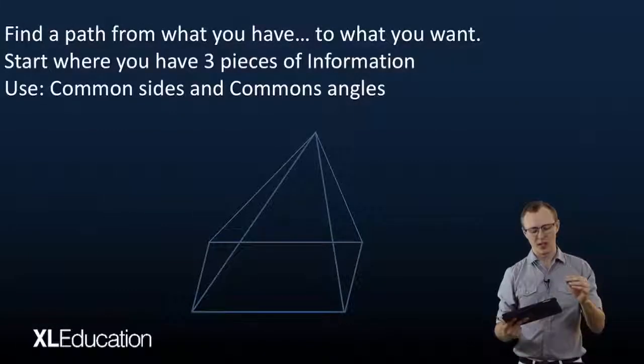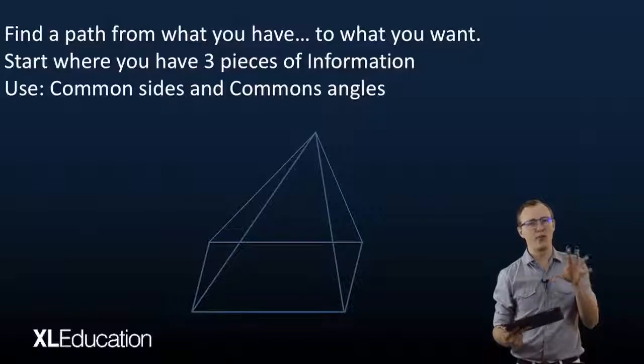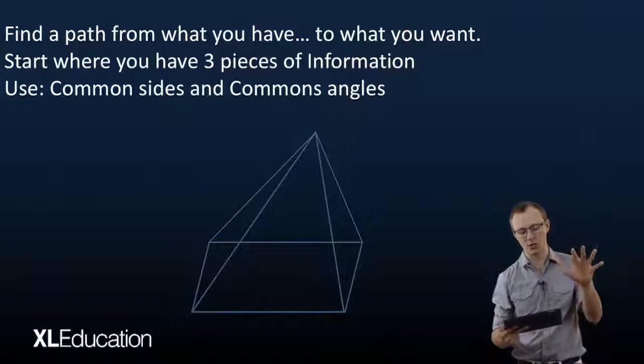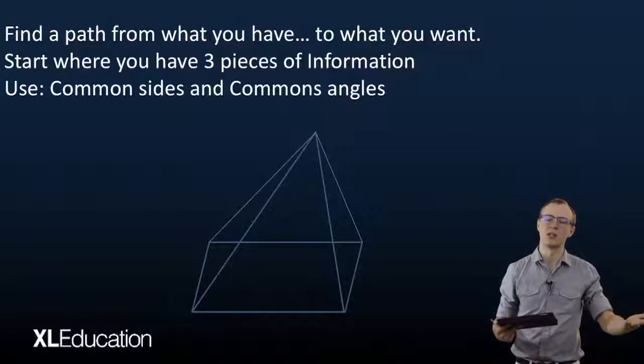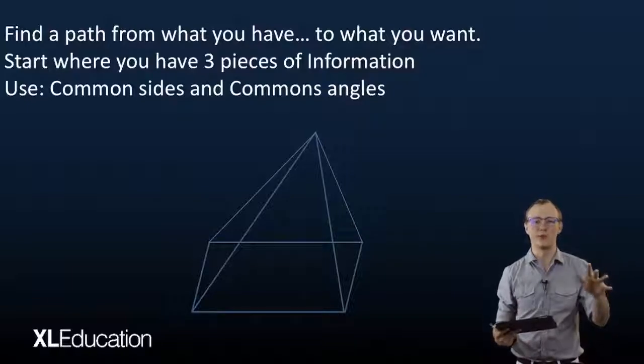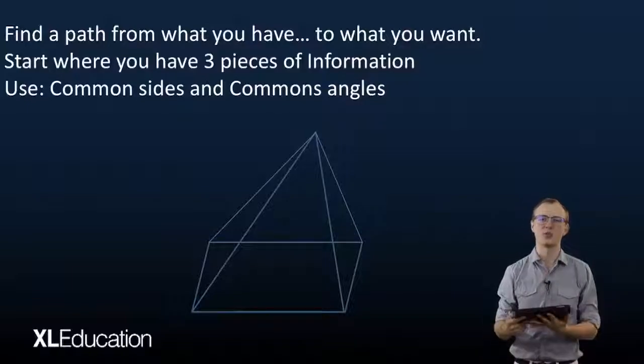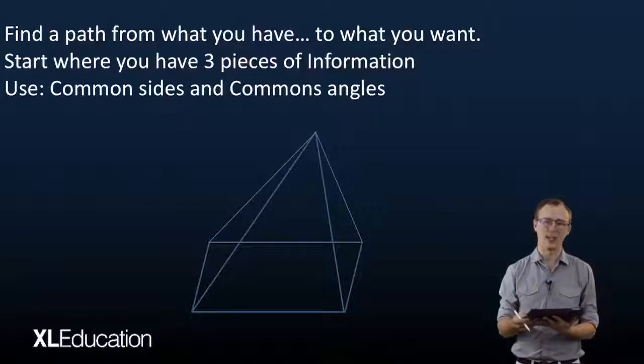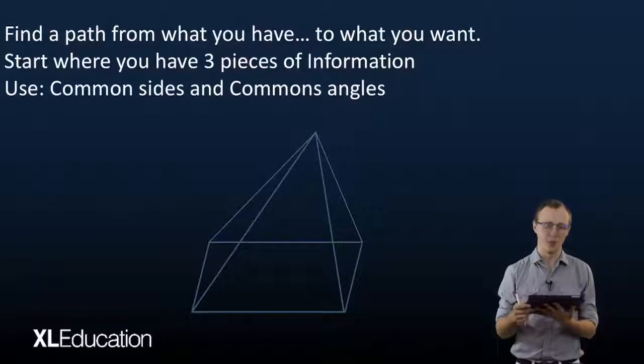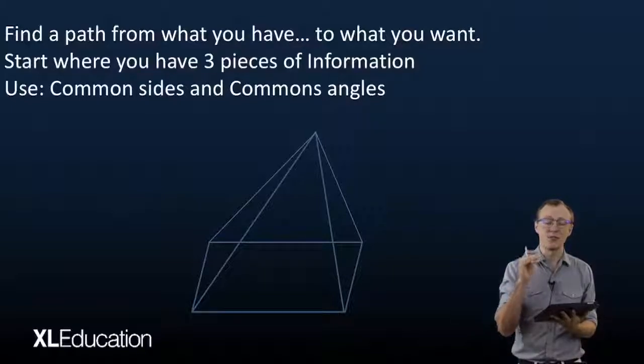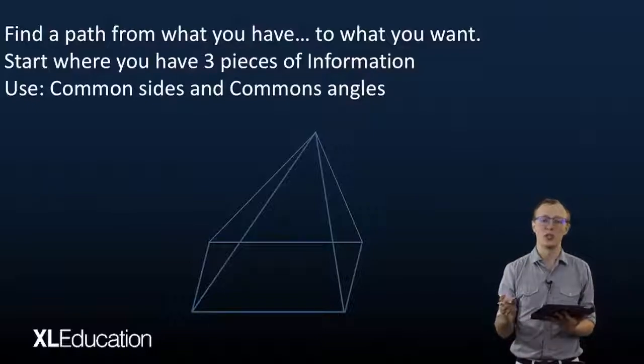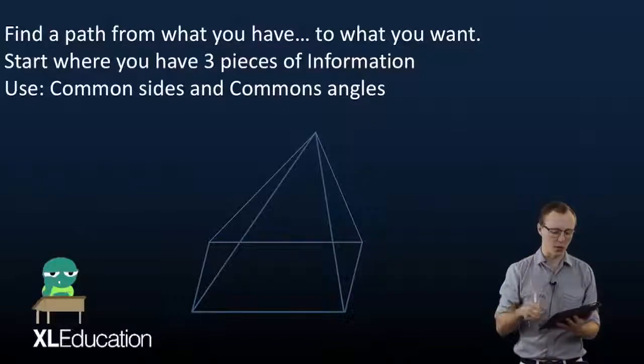My last tip for you is to find a path from what you have, your three pieces of information where you're going to start, to what you want, which is the triangle or the shape where you are trying to solve for something, an angle or a side. So again, start where you have three pieces of information, and then you have to use common sides and common angles in order to get from where you started to where you want to be.